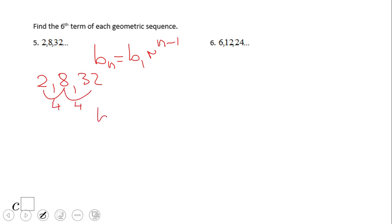So we're going to have B6, because we need the sixth term. B6 equals B1. B sub one is two. The common ratio is four. And then six minus one. So we get here two times four to the fifth power.